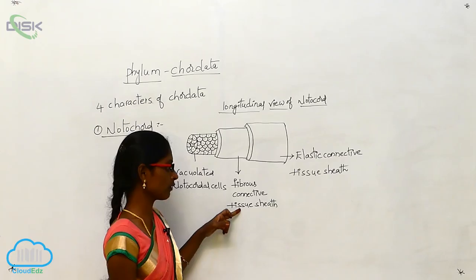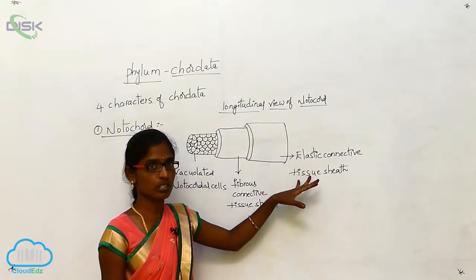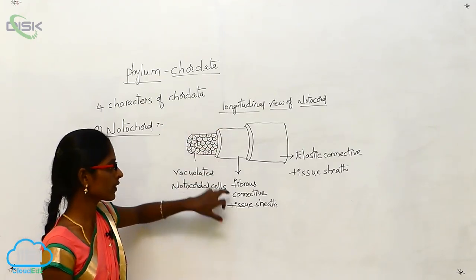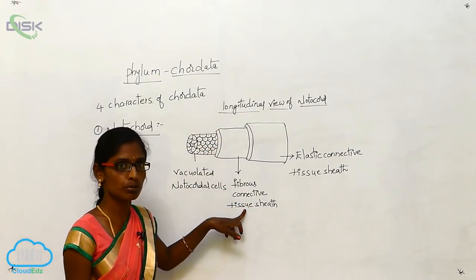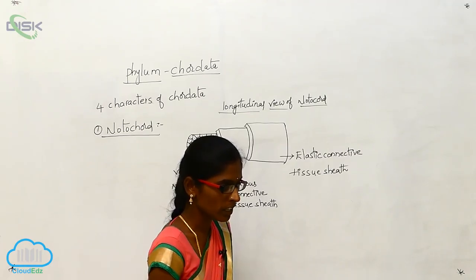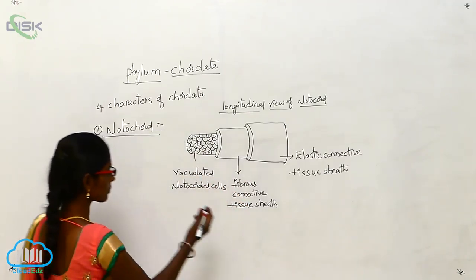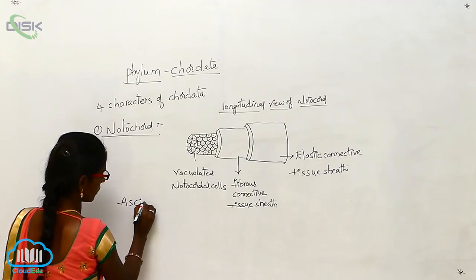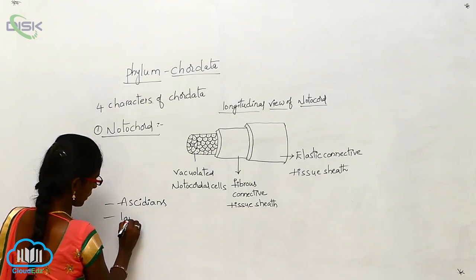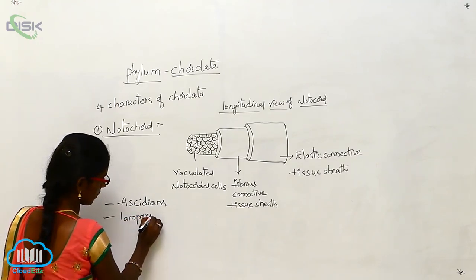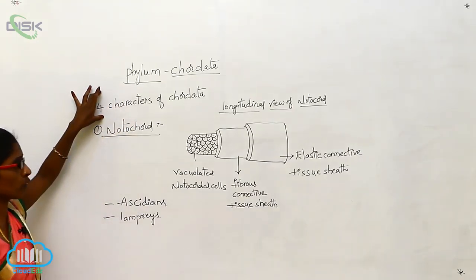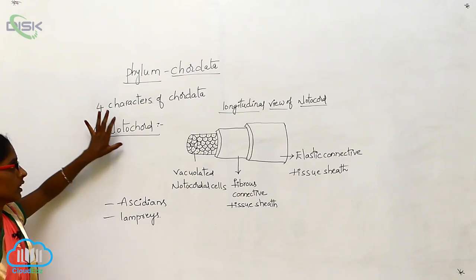Longitudinal view of notochord. In the notochord, three membranes are present: vacuolated notochord cells, fibrous connective tissue sheath, and elastic connective tissue sheath. The vacuolated notochord cells are covered by the fibrous connective tissue sheath, which is then covered by the elastic connective tissue sheath. This is present in some urochordates and lancelets.